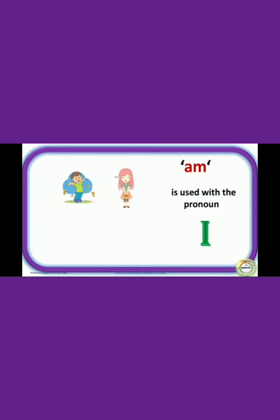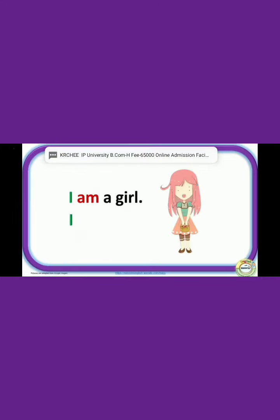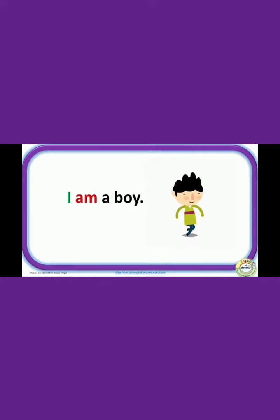Am is used with the pronoun I. Like, I am a girl. This sentence starts from I, so we use Am with I. I am a girl. I am a boy. This sentence also starts from I, so we use Am with I.